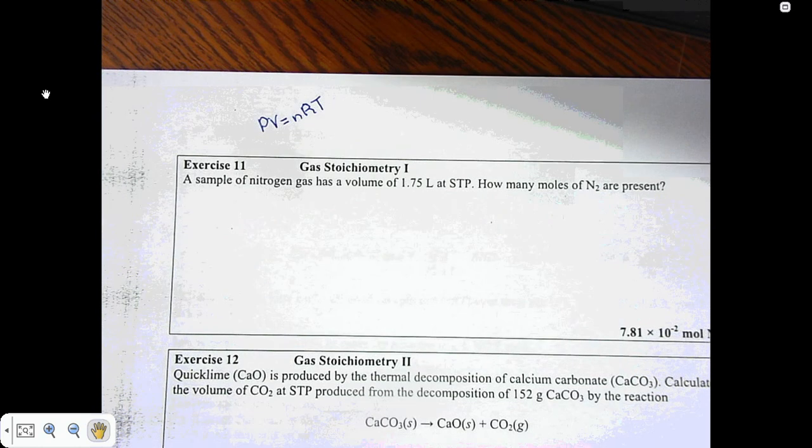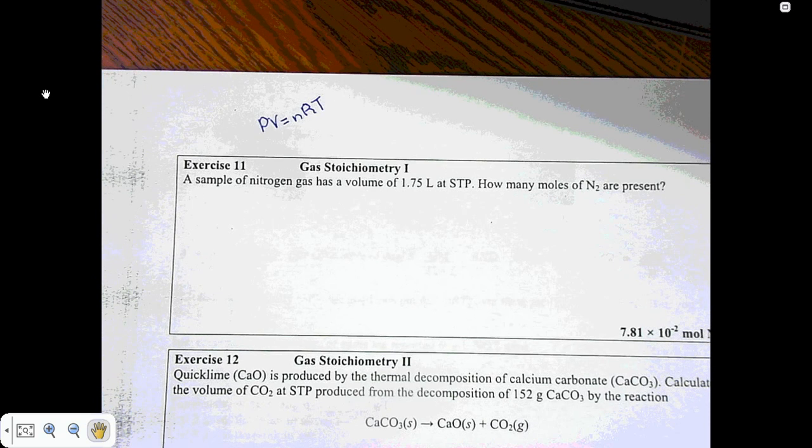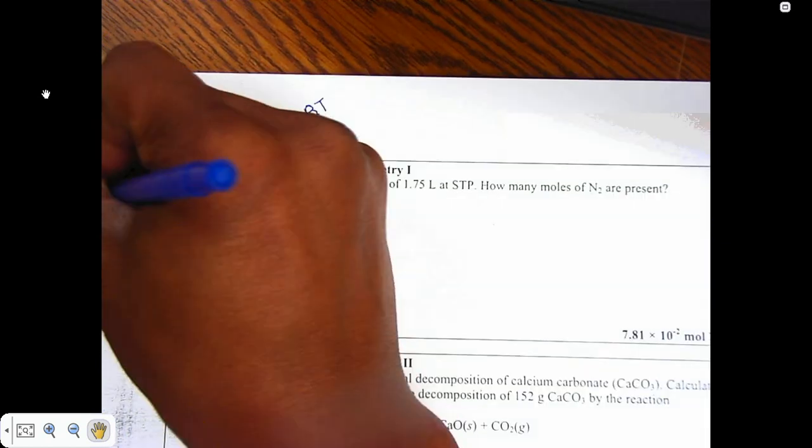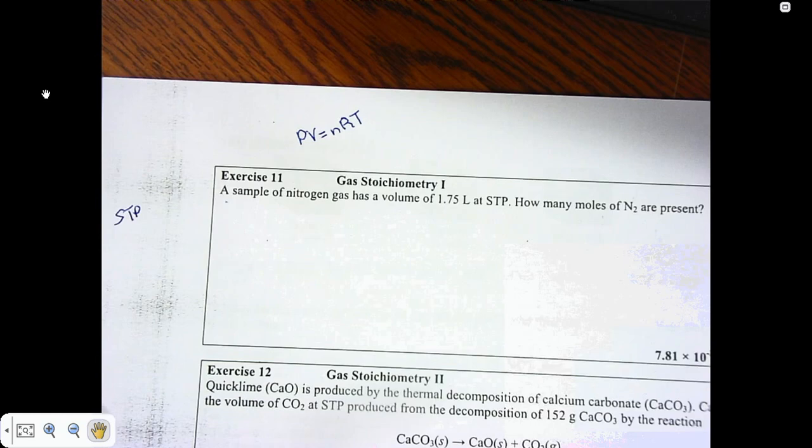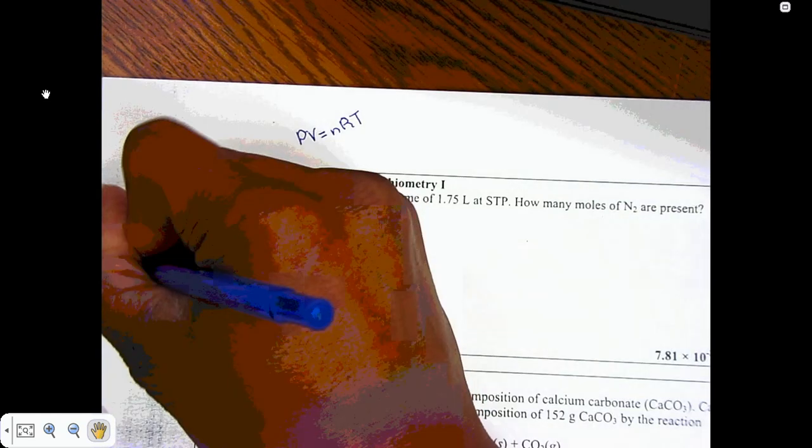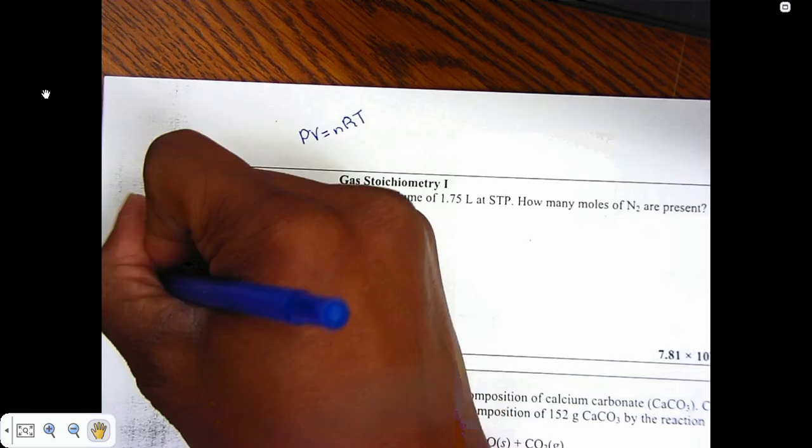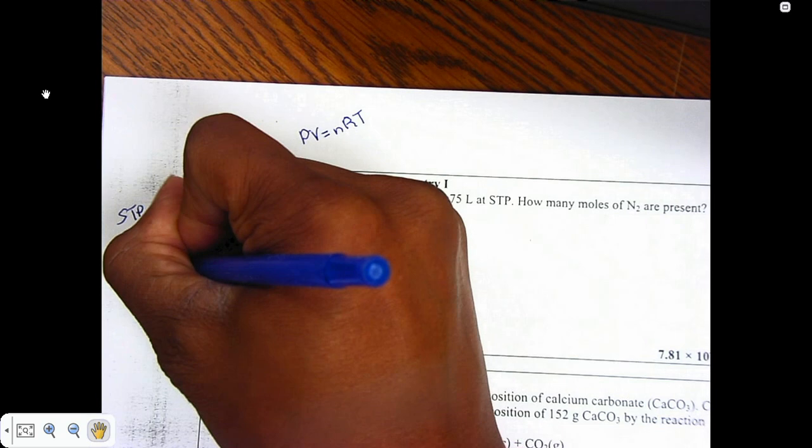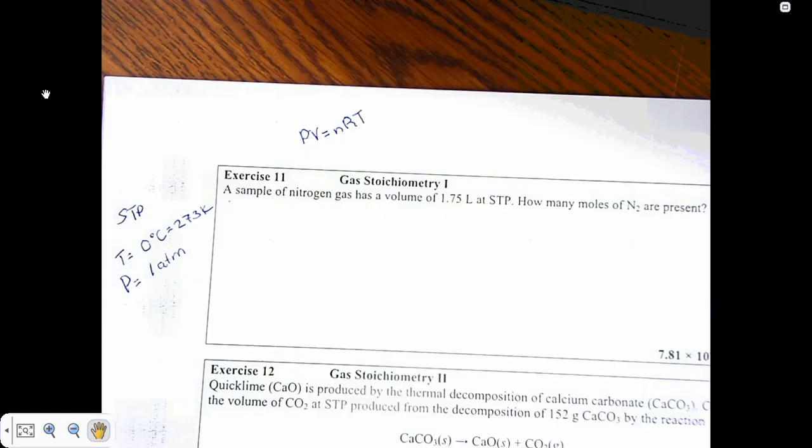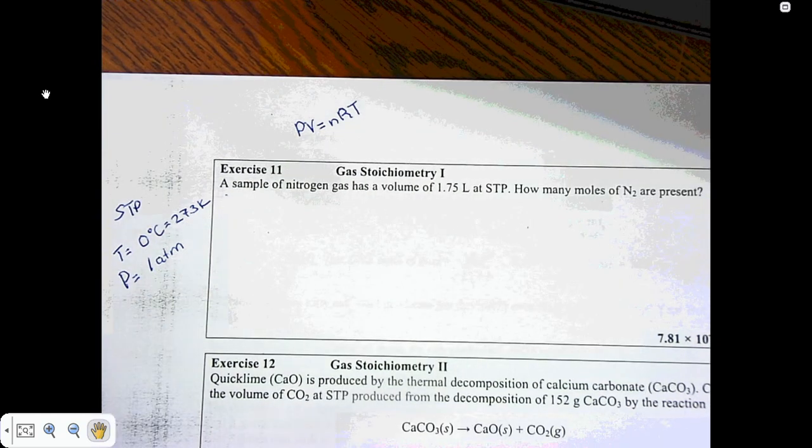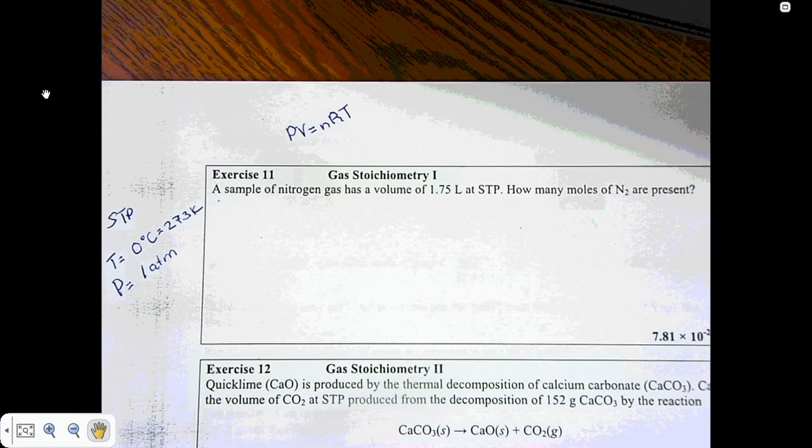A sample of nitrogen gas has a volume of 1.75 liters at STP. How many moles of nitrogen are present? We begin by establishing what STP is. STP stands for Standard Temperature and Pressure, and that means that the temperature is going to be 0 degrees Celsius, which is 273 Kelvin. This also implies that the pressure is 1 atm of pressure. So now we have pressure, we have temperature, we have volume, and we do want to make sure that we know our rate constant.